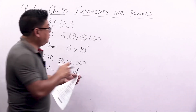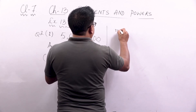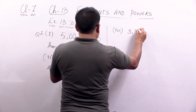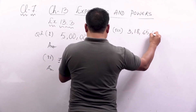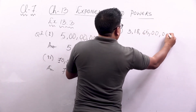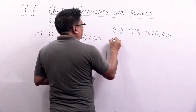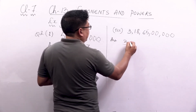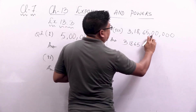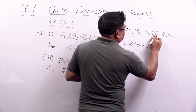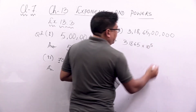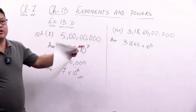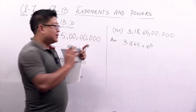Now if I want to write 3186500000 in standard form: taking all the digits together gives 31865 into 10 to the power 5. But if you do it like this, this is not in standard form. This is not the simplest form. So what we will do is take only one digit before the decimal point.